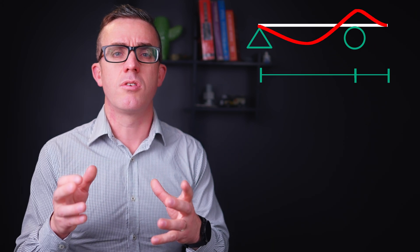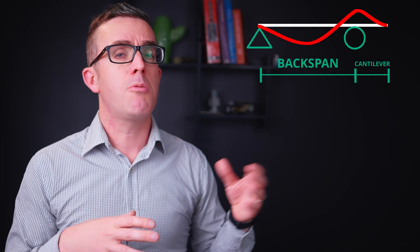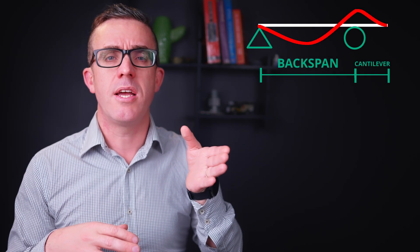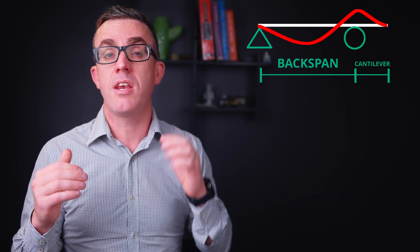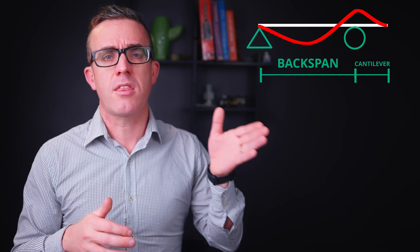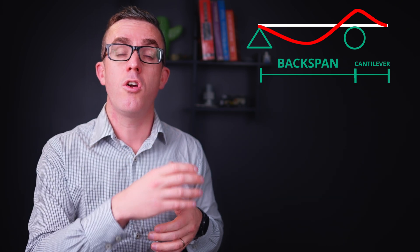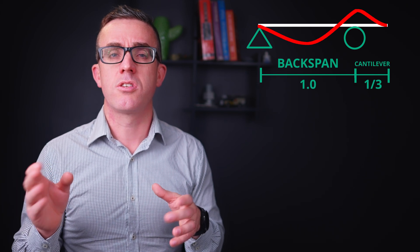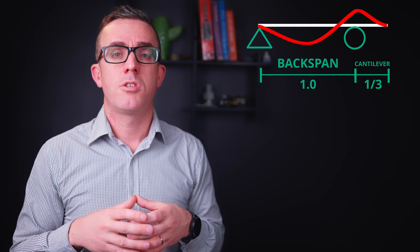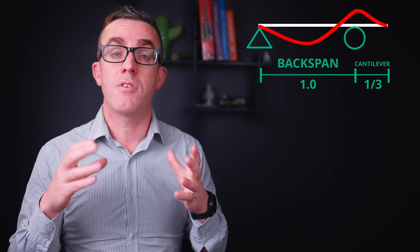An area that is often forgotten about is the benefits of cantilevers in your design. If you're able to pull the column grid slightly back from the edge, you have a significantly more efficient design by improving deflections and also balancing out the positive and negative bending moments. Wherever possible, try to pull back the column grid so you have roughly a one-third to one-sixth cantilever based on its backspan to achieve a more efficient design overall.